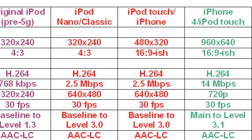Now, why would you want to encode at 640 by 480 if you've got only a 320 by 240 screen resolution for the iPod Nano and Classic, and a 480 by 320 screen resolution for the iPod Touch and iPhone? Well, some of these devices had NTSC output ports, so you could actually play video transferred to these devices on a television set — and that's where 640 by 480 comes in handy.